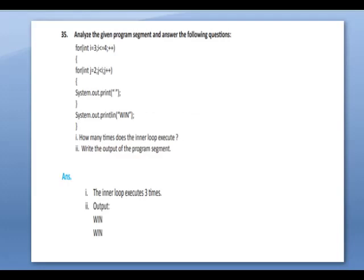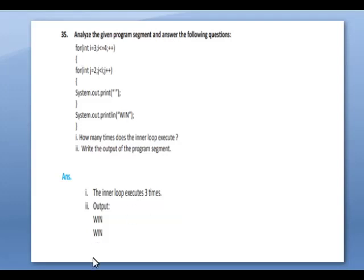Analyze the program segment and answer the following questions. How many times will the loop execute? The inner loop will execute 3 times. If there are two loops, the inner loop executes first; when the condition becomes false, the outer loop executes. The output of the programming segment is 'Win'.